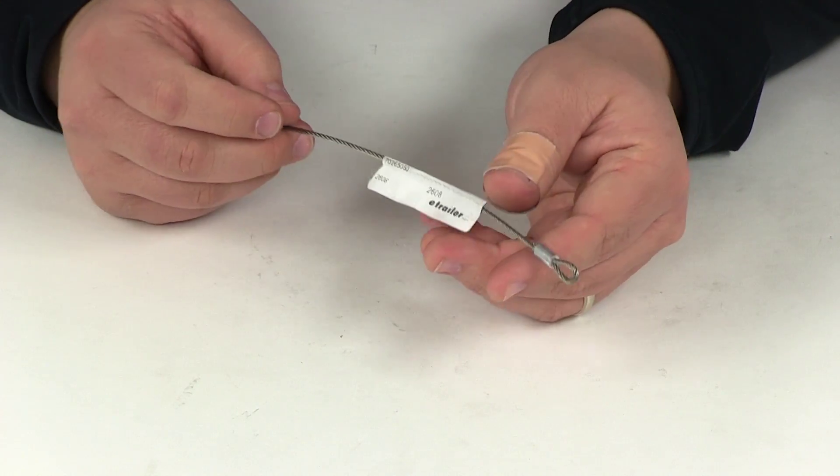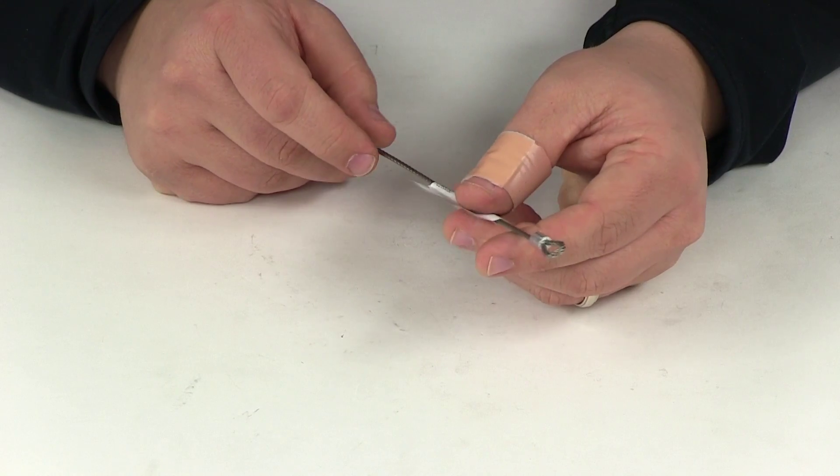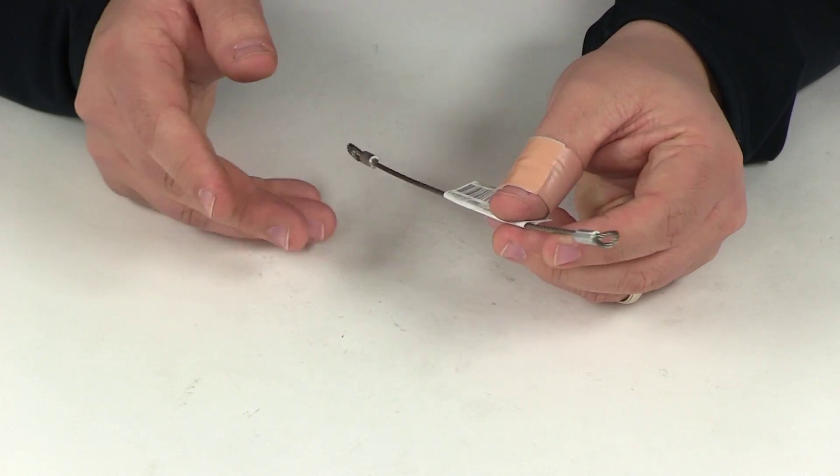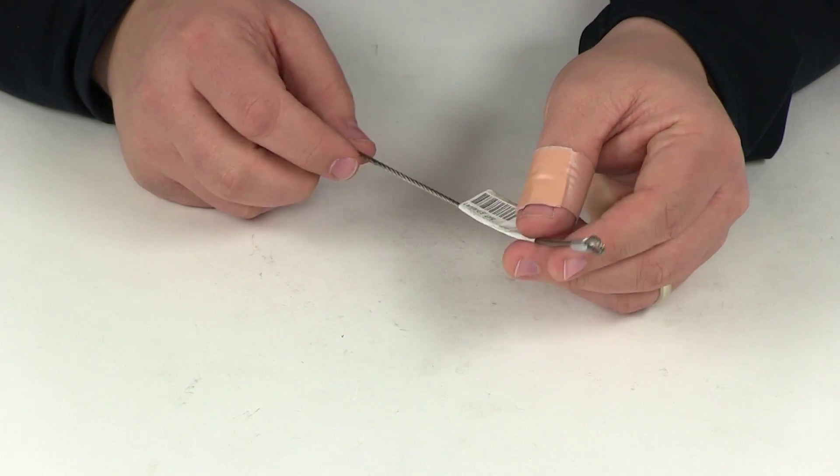This lanyard is going to help keep your hitch pin, linch pin, or snapper pin close by when you're not using it. That way you don't ever have to worry about losing it or misplacing it.